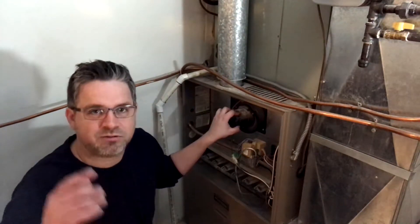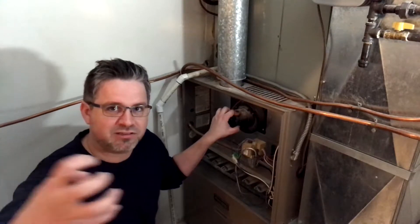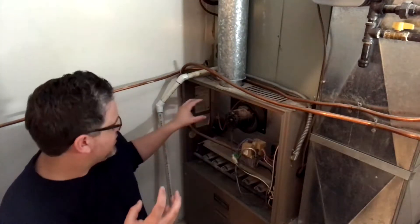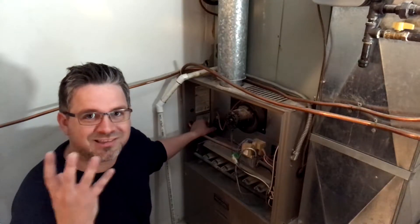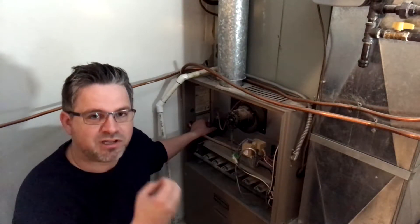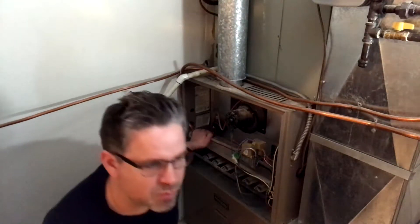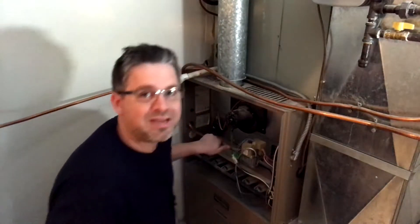To make sure that the inducer fan is running and that the exhaust gases are getting sucked out and leaving the furnace, there's a little part here called the pressure switch. It senses that that part's running. It's like a little double check. Going down one more step, this thing is called a gas valve.